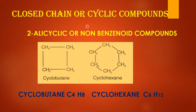The second type of closed chain or cyclic compound is alicyclic or non-benzenoid rings. These cyclic compounds do not contain a benzene ring in their structure. Let's see the examples of cyclobutane and cyclohexane.